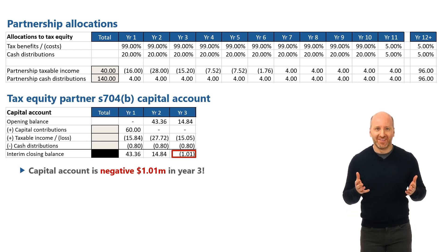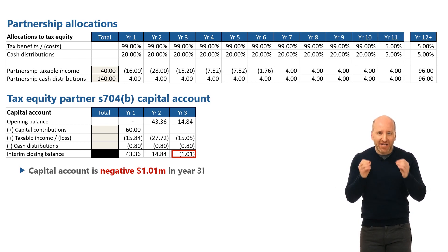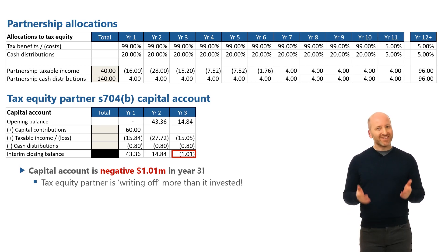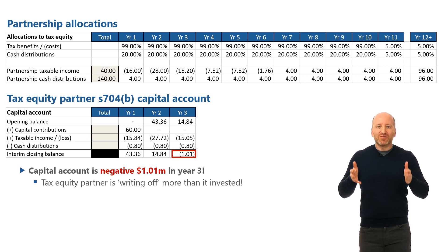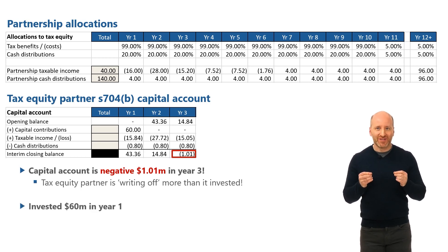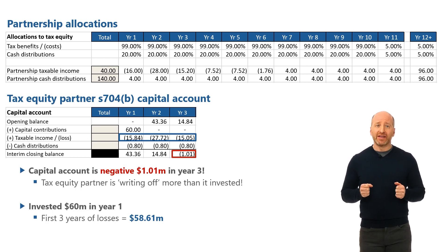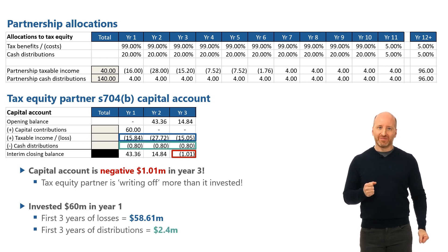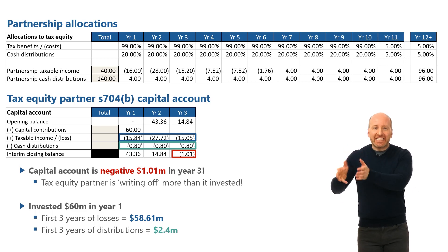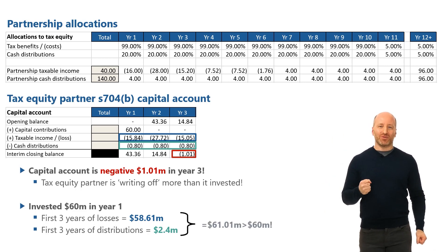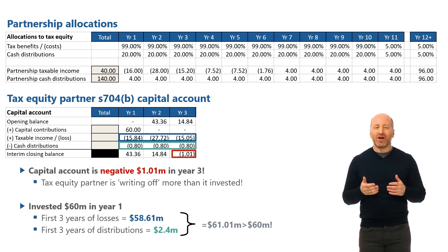What does this really mean? Well, due to the disproportionate sharing of tax and cash, the tax equity partner is taking losses — they are writing off more than they invested, which is precisely what we said we can't do. Losses are the most influential line in the total partnership account. By the end of year three, losses have totaled $59.2 million, of which the tax equity partner has taken 99%, or $58.61 million. And distributions have totaled $12 million in the same time period, and the tax equity took out 20% of this, or $2.4 million. So the tax equity investor put in 60% of the capital and took out 99% of the largest benefit, so of course their account is going to go negative.